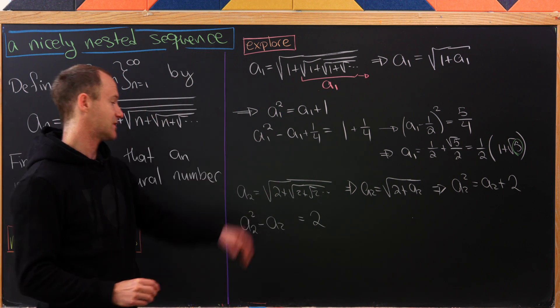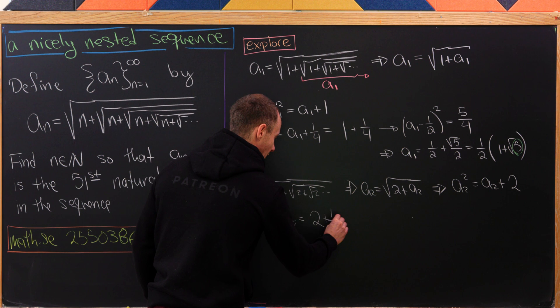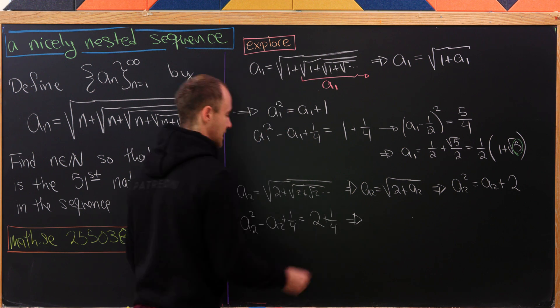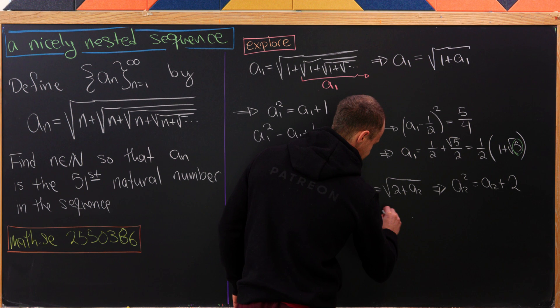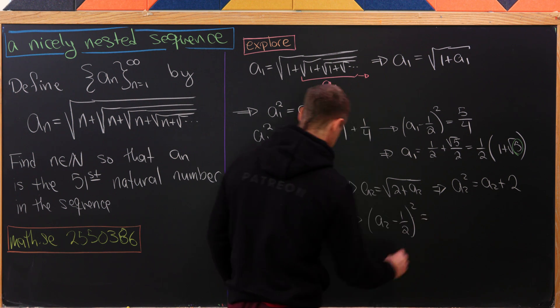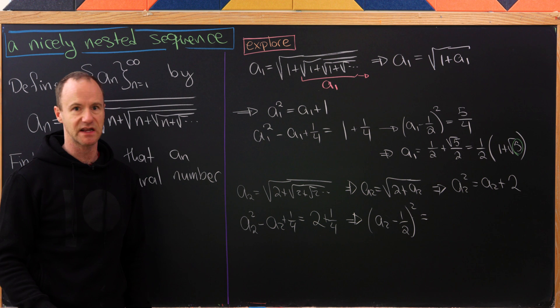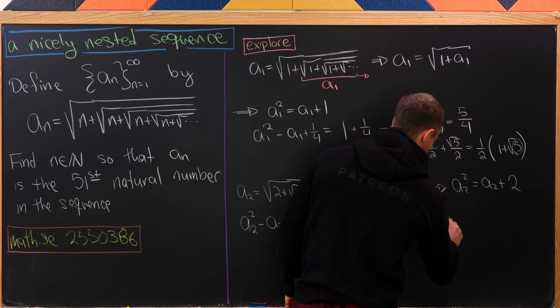Moving things around, we have a_2 squared minus a_2 equals 2. Then we'll do the same completing the square. In fact, it's exactly the same. We'll add 1/4 to both sides. That leaves us with (a_2 - 1/2) squared equals 8/4 plus 1/4, which is 9/4.